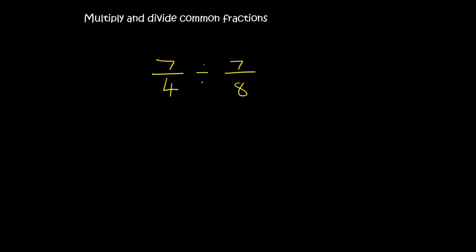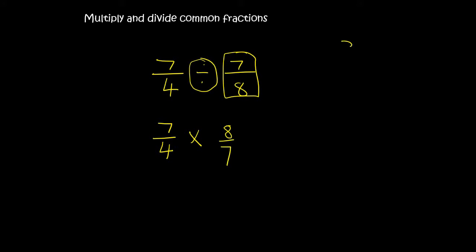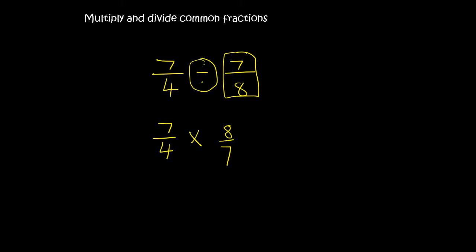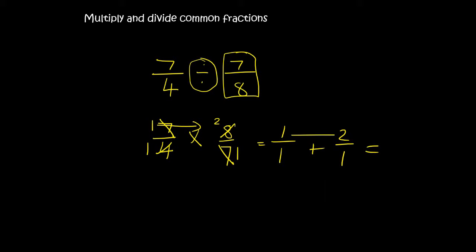Now, dividing. There's a little trick: when dividing two fractions, you keep the first one the same, change the sign to multiply, and flip the second fraction upside down. For example, 3 over 4 divided by 9 over 16 becomes 3 over 4 times 16 over 9. That rule is very important — you will use it until the end of grade 12. Then you cross-cancel and multiply as normal. In this example, 7 goes into itself once and once; 4 goes into itself once and into 8 twice, giving 1 over 1 times 2 over 1, which equals 2.